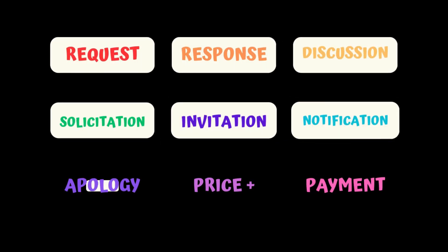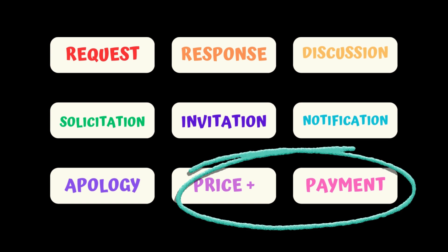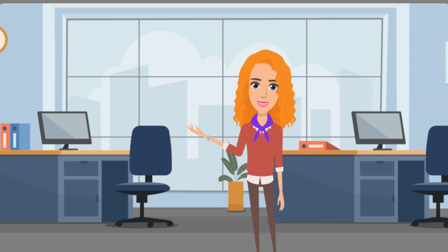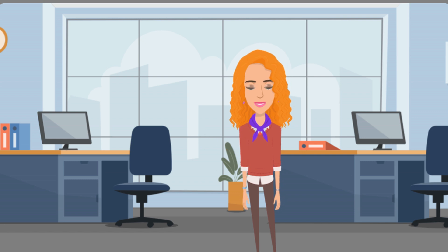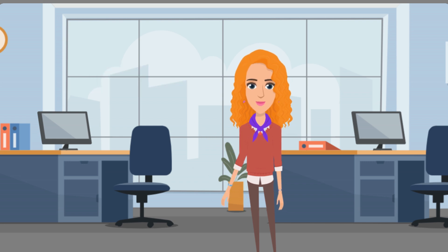The topics are: Request or Reminder, Response, Discussion, Solicitation, Invitation, Notification, and Apology. In addition to these seven types, there are two others — Price Increase Letter and Payment Reminder Letter — which are usually written by specialized departments and less frequently used, so we will not go into detail about them here. Today's content may be a bit dry, but it is highly useful. I recommend bookmarking it. All right, let's get started.